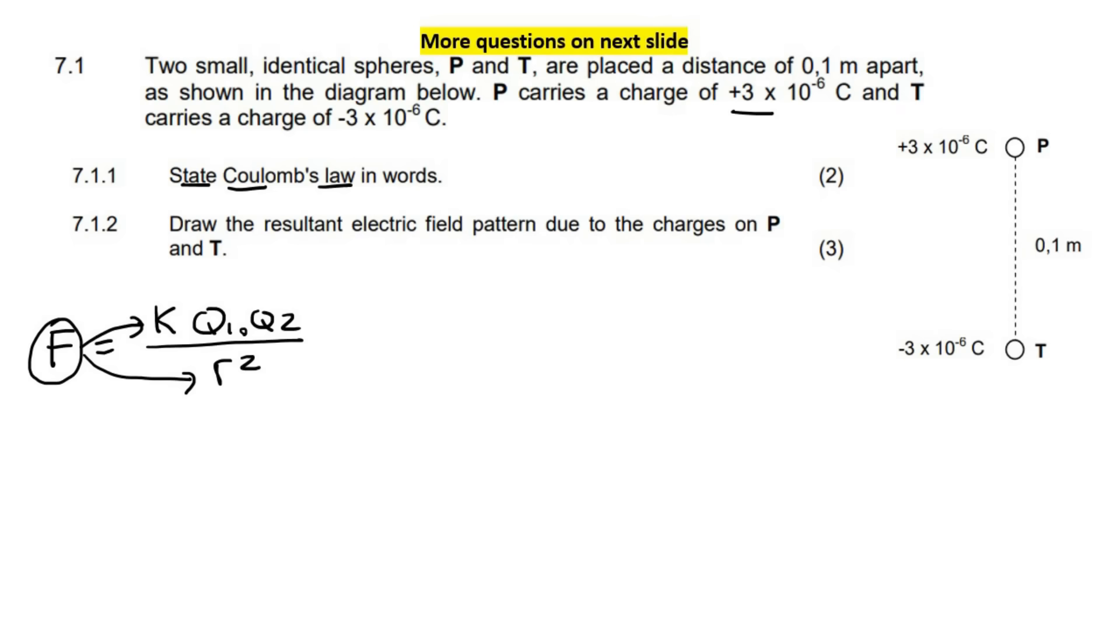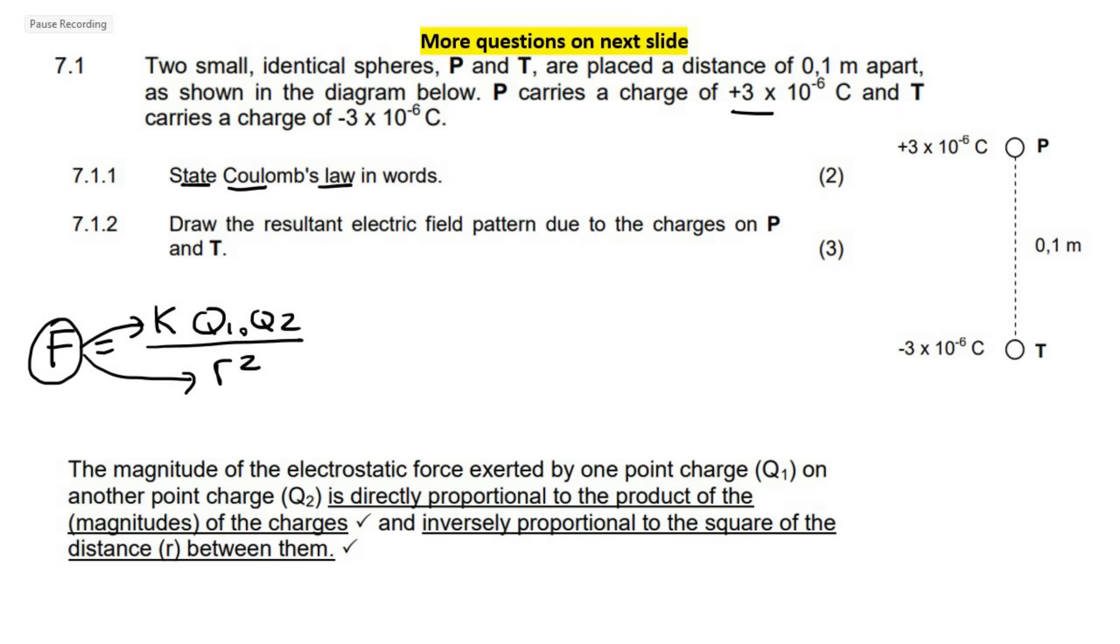Now, let's go get the proper definition. And so here we have: the magnitude of the electrostatic force exerted by one point charge on another point charge is directly proportional to the product of the magnitude of the charges and inversely proportional to the square of the distance between them. So from the formula, you can often, it helps you to remember the definition.